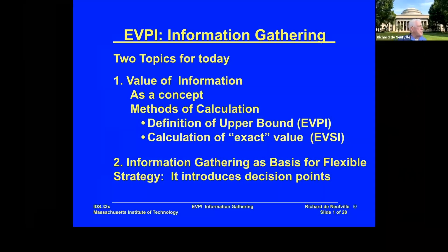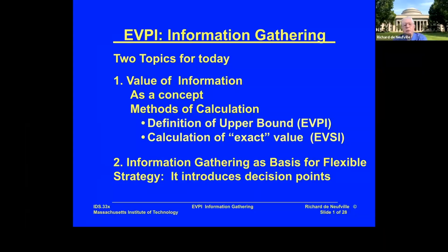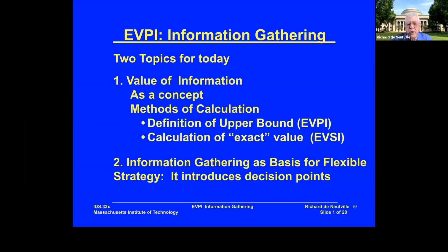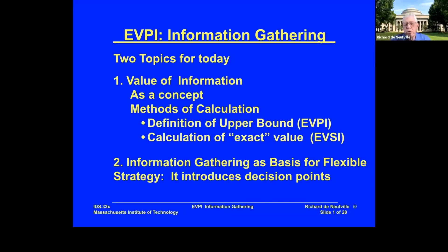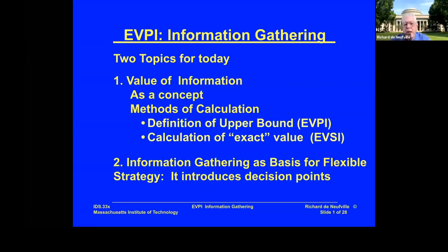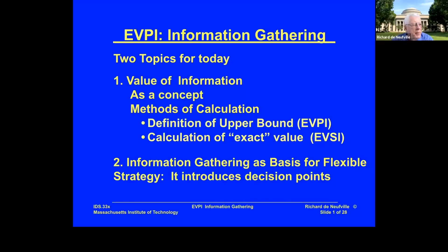We have two topics for today. The first is the concept of the value of information. I'll present in some detail the procedure for defining the upper bound: the EVPI, which stands for Expected Value of Perfect Information. As a supplement, there is also the calculation of the exact value of EVSI — an interesting probabilistic exercise, though not very valuable in practice. It's part of standard curricula, but it will not be part of a quiz.